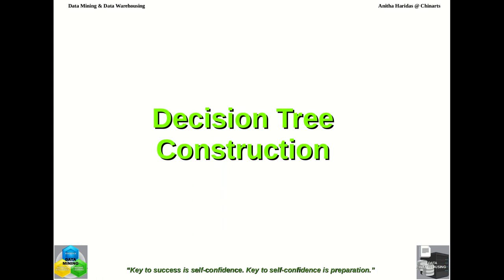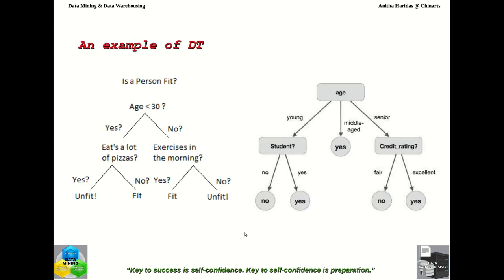Today in this video we are going to talk about how the decision tree is to be constructed. This is an example of a decision tree where this is the root node, these are the internal nodes, these are the branches, and these are the leaf nodes. Here the root node has a partition with branches leading to internal nodes and leaf nodes. This is an example we already discussed in previous videos, and now we are going to see how this decision tree can be constructed.